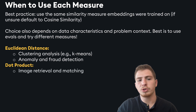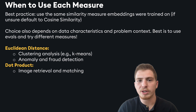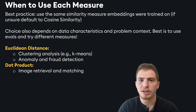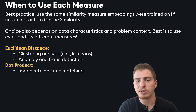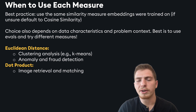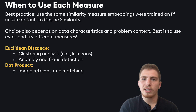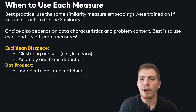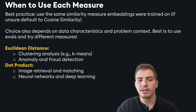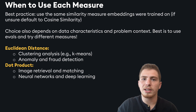Dot product was traditionally used for image retrieval because we care about how much different features are represented — for example, how blue an image is, or whether it contains a certain object. However, in practice, many image retrieval systems use multimodal embeddings like CLIP embeddings, which were trained specifically with cosine similarity in mind. So cosine similarity makes more sense for CLIP image retrieval. Even if a specific similarity measure makes sense in theory, in practice it's best to use the measure that embeddings were trained on. Dot product is also used in the fully connected layer in neural networks and has many applications in deep learning.